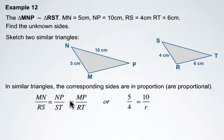For our second ratio, NP was given as 10 centimeters. Side ST is unknown, but rather than leaving it labeled as ST, we'll label it as lowercase r because it's across from angle R.